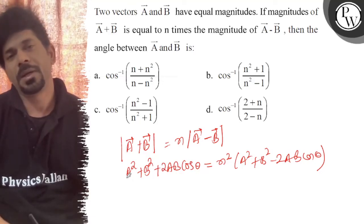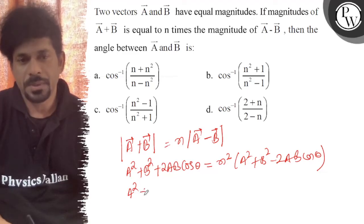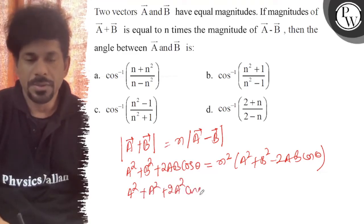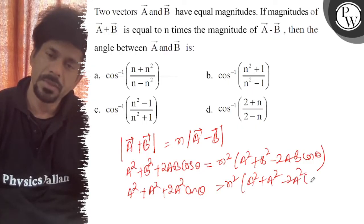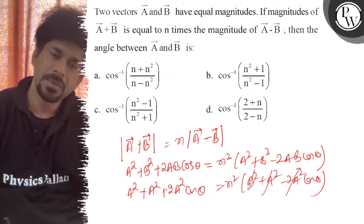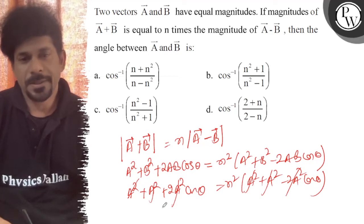Lekin saath mein ye bhi bol raha hai ki A aur B equal magnitude ke hai. To A square plus A square plus 2A square cos theta is equal to n square A square plus A square minus 2A square cos theta. Sare A square se A square kati jayenge.